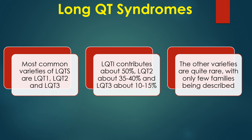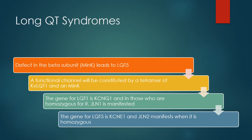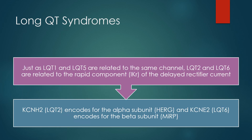The other varieties are quite rare, with only a few families described. LQT1 is due to a defect in the gene encoding the alpha subunit of the potassium channel conducting the slow component of the delayed rectifier current — the major repolarizing current during phase 3 of the cardiac action potential. A defect in the beta subunit leads to LQT5. A functional channel is constituted by a tetramer of KVLQT1 and MinK. The gene for LQT1 is KCNQ1, and those homozygous manifest JLN1. The gene for LQT5 is KCNE1 and JLN2 manifests when homozygous. LQT2 and LQT6 are related to the rapid component of the delayed rectifier current; KCNH2 encodes the alpha subunit and KCNE2 the beta subunit.